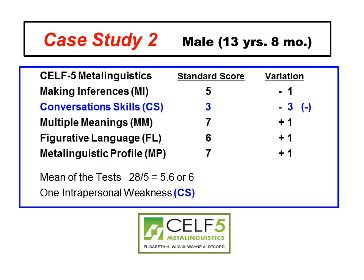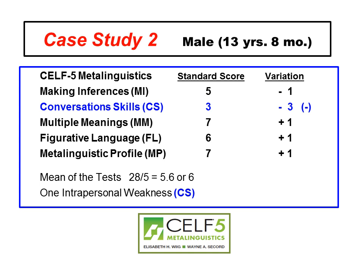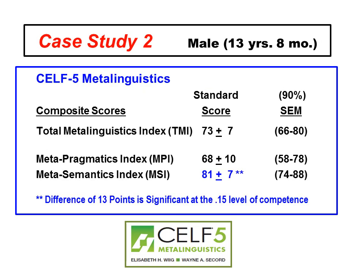Here's his CELF-5 Metalinguistics scores. Conversation skills: scaled score of three. The other tests: seven, six, seven. His total metalinguistic index score is 73 plus or minus seven. His metapragmatic score is 68. He's got a little stronger word memory and vocabulary, but his total meta scores are really low — in the moderate to severe range. His WISC scores are 93, 108, 108, 101, 93 — all in the average range. Working memory score of 90, low average range, which happens when you have language and metalinguistic issues. If you only go on the standard CELF-5 score, he will not qualify, but he has clear metalinguistic issues.